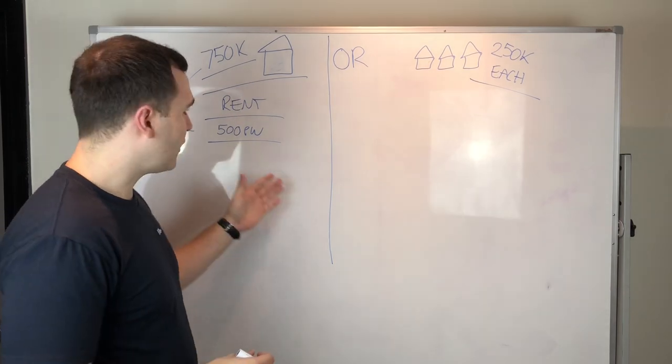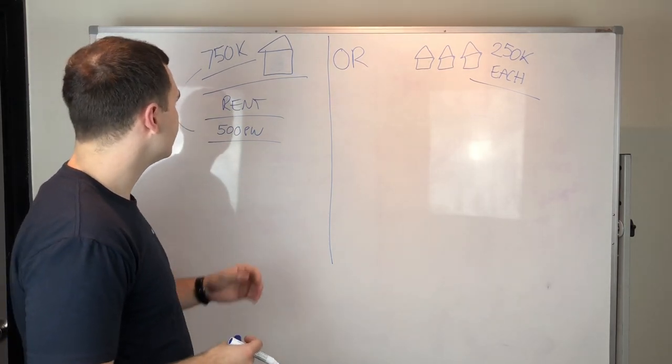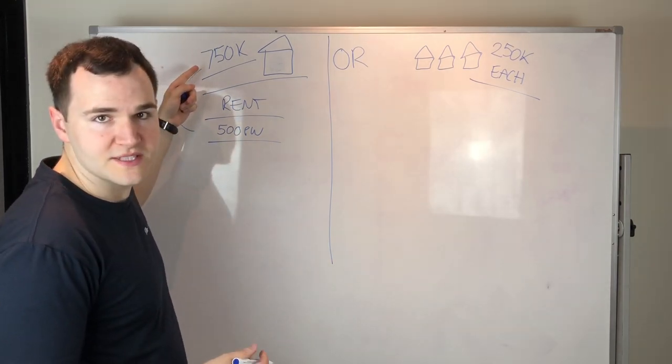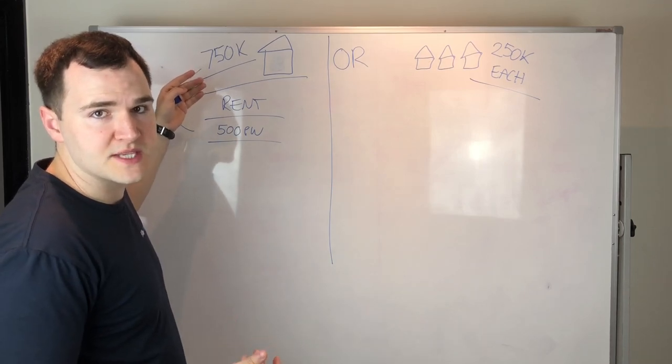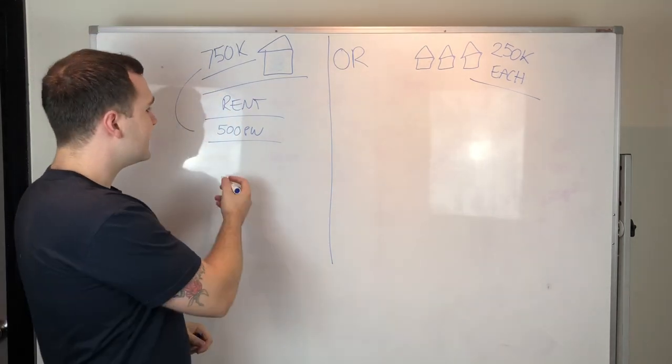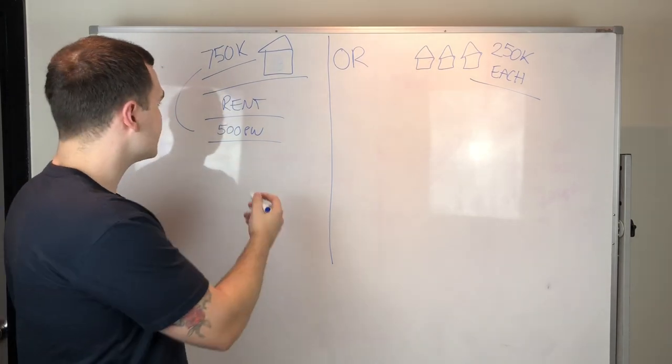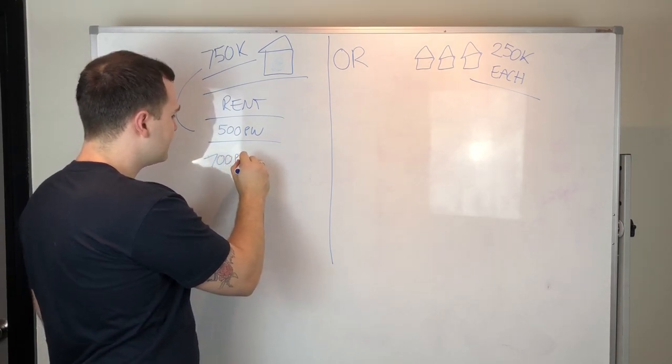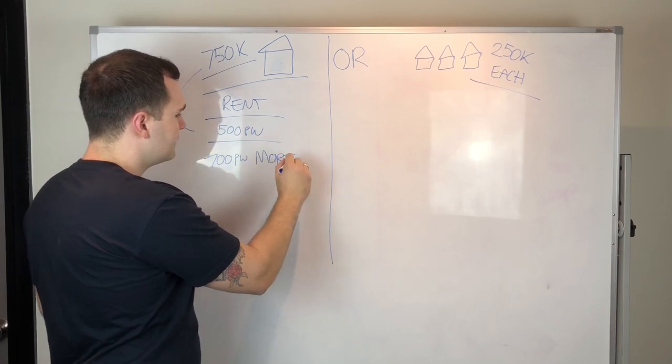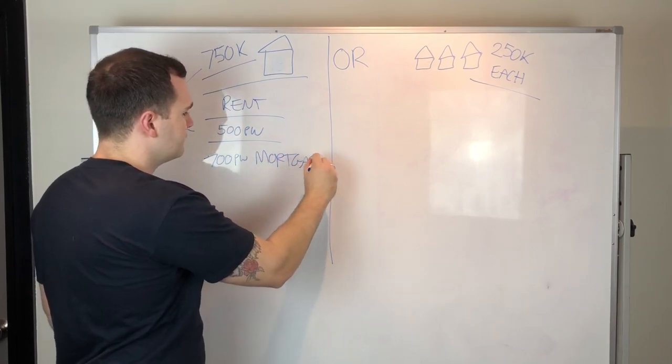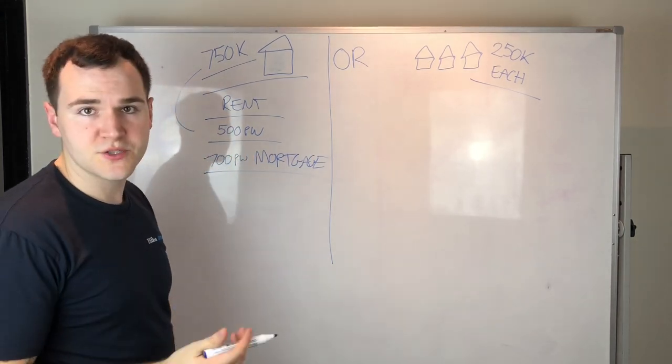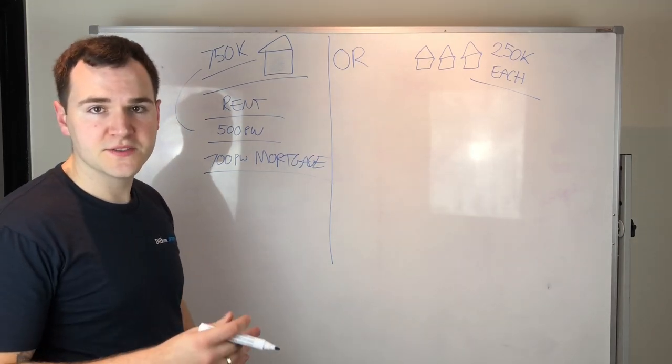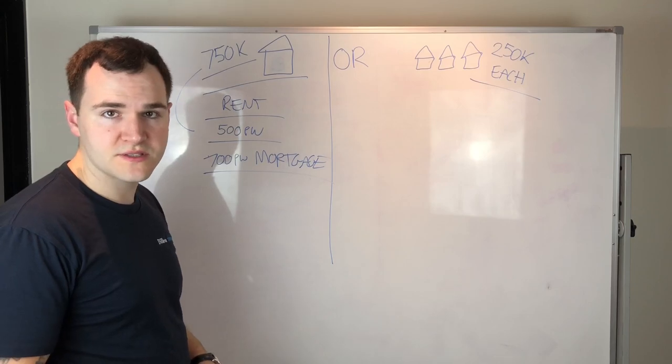A major thing that I look at with just buying one property for $750,000 is that the mortgage repayments on $750,000, even if you did a 10 or 20% deposit, would be probably anywhere between $600 to $800 per week on principal and interest. Say if there's $700 per week for the mortgage, you automatically minus $200 a week, so you're losing $10,000 a year in holding this property. That's not including council rates, water rates, management fees, insurance, strata.